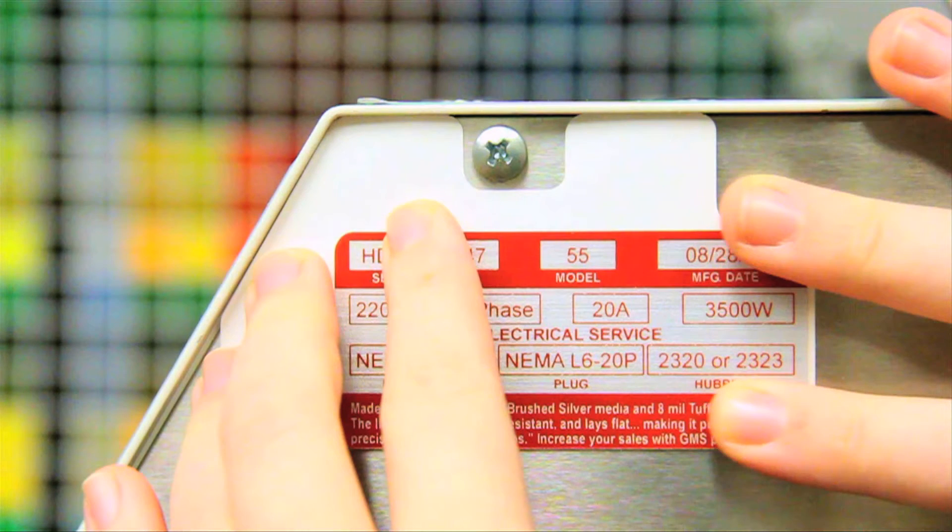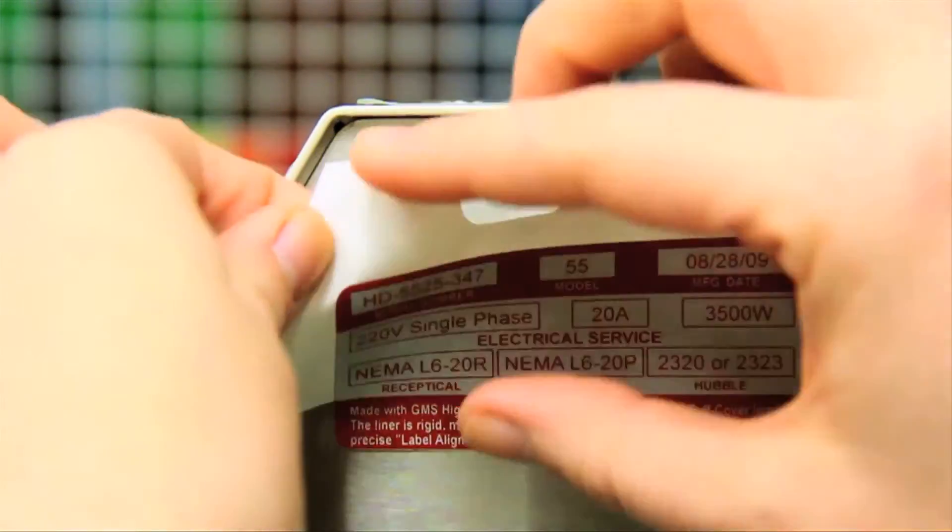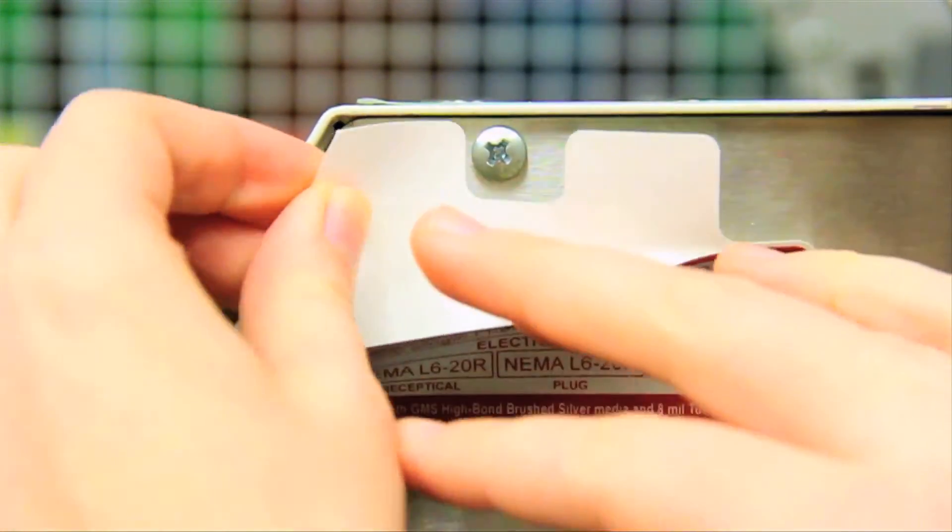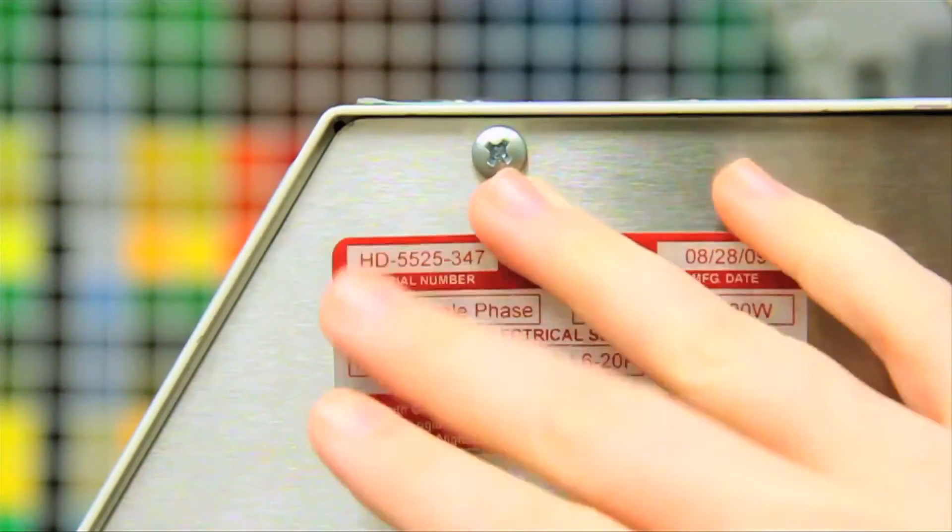Then at the bottom of the label, where the adhesive is exposed, is pressed down to secure its position. Then you simply remove the remaining part of the liner and press down the rest of the label to complete the application.